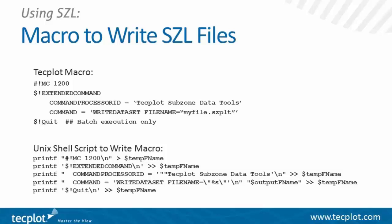If you want to automate the generation of this macro, here's an example of how to do it in a Unix shell script using a series of printf commands. The temp file name would be something you create — it can be some arbitrary temporary file name. You would have on the command line an input file name and also the output file name. It just generates the macro into this temporary file, and then below this you would have the tech360 -B command, specifying the temp file as the macro command.